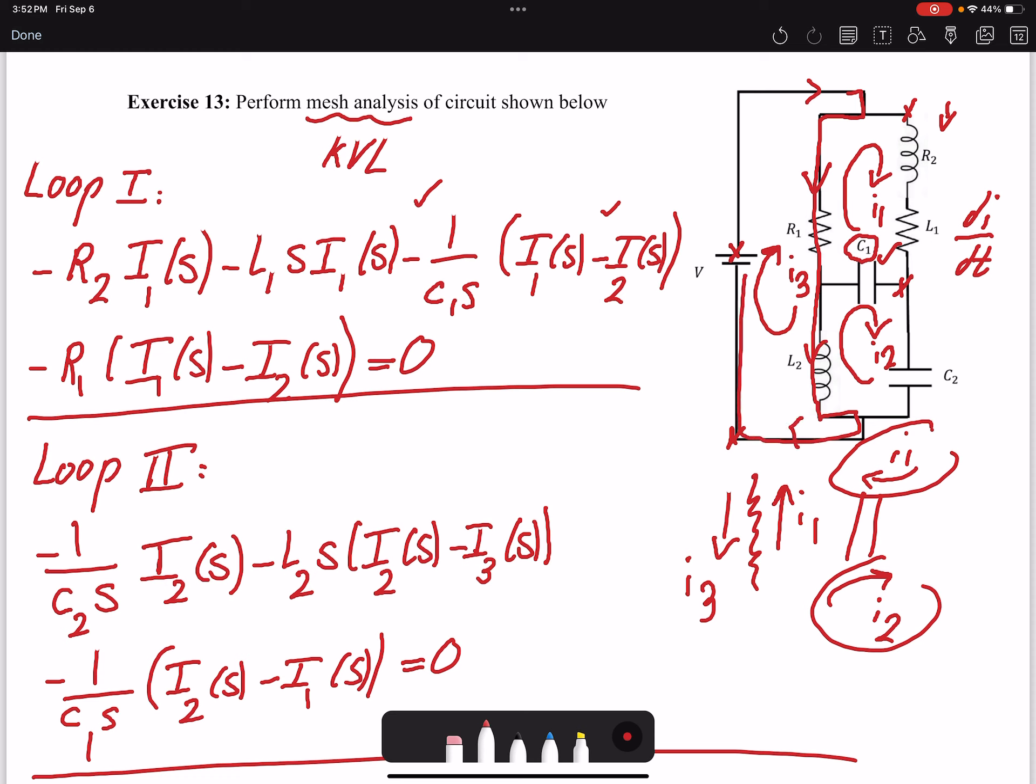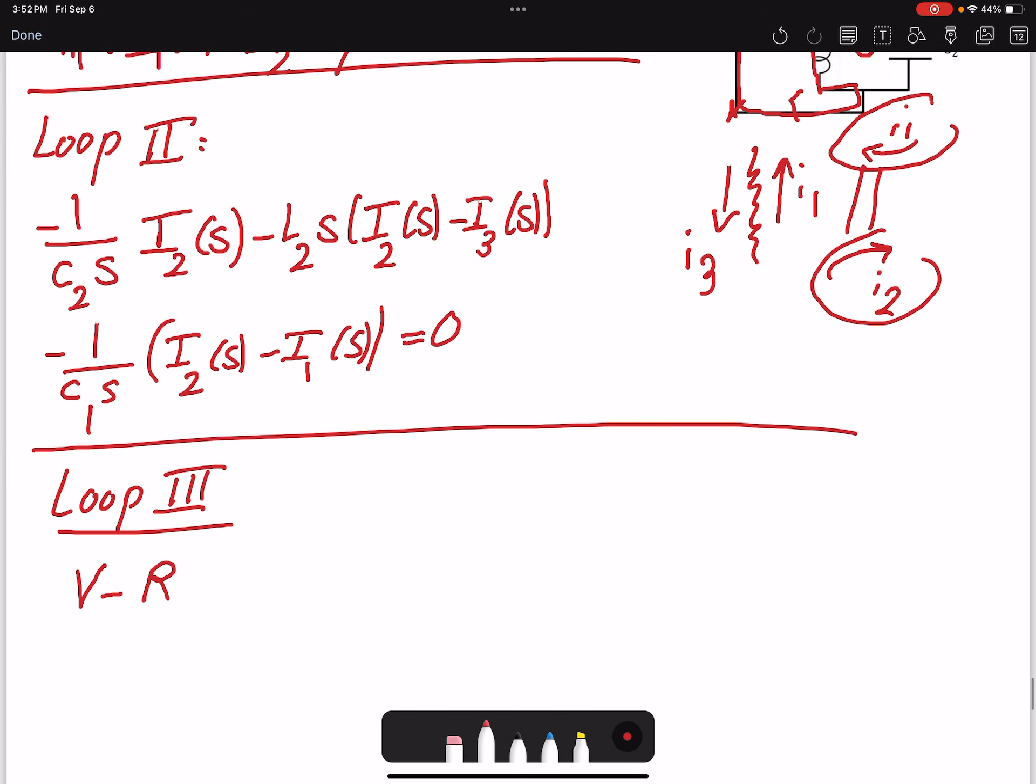I have R1, which is I3 minus I1. Then I have L2*s, and for L, I have I3(s) minus I2(s).